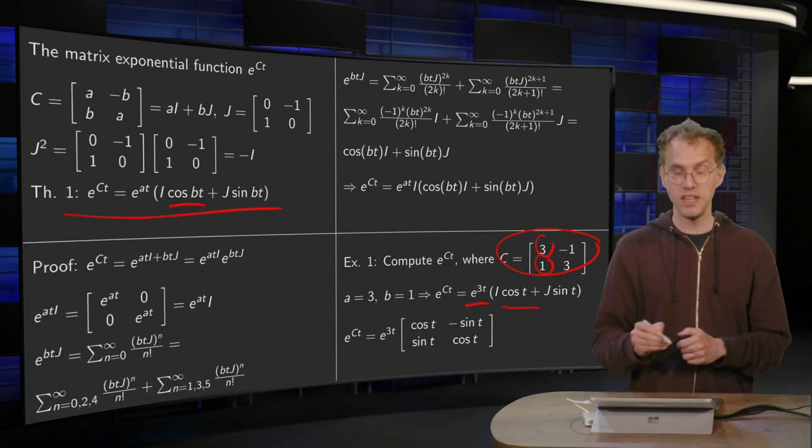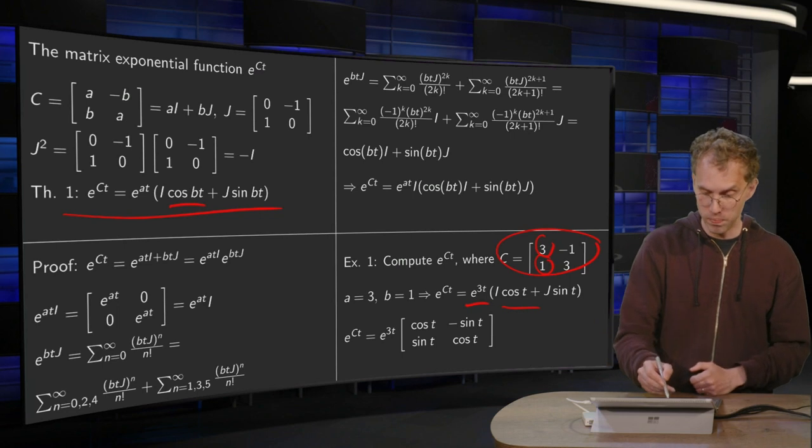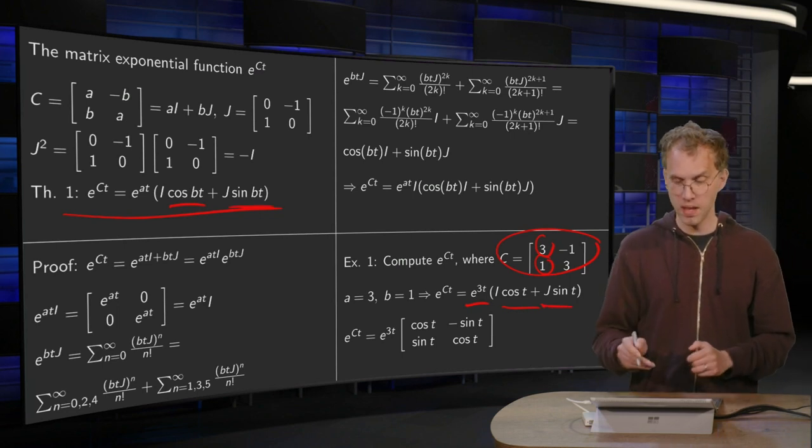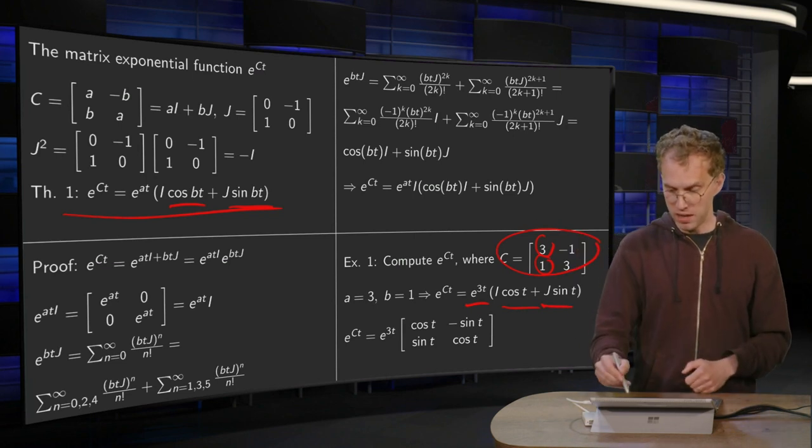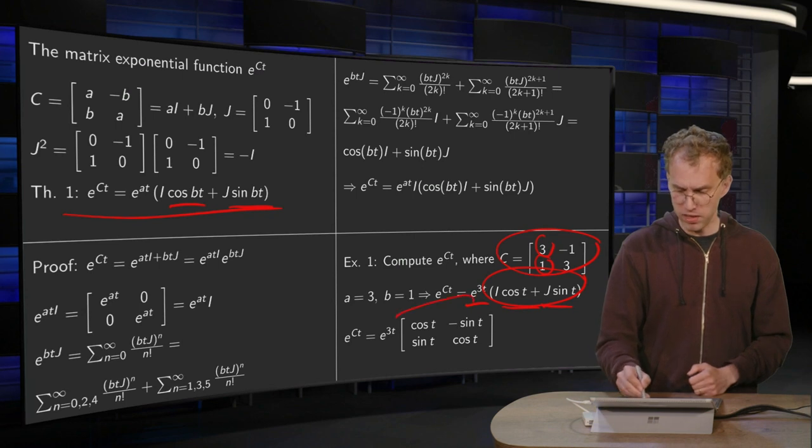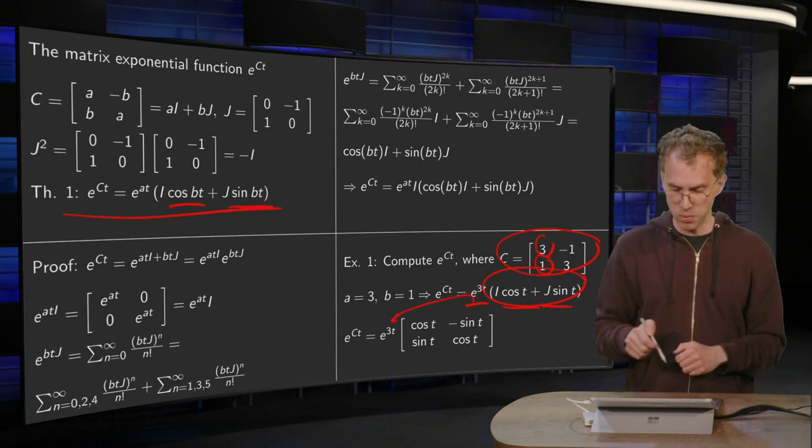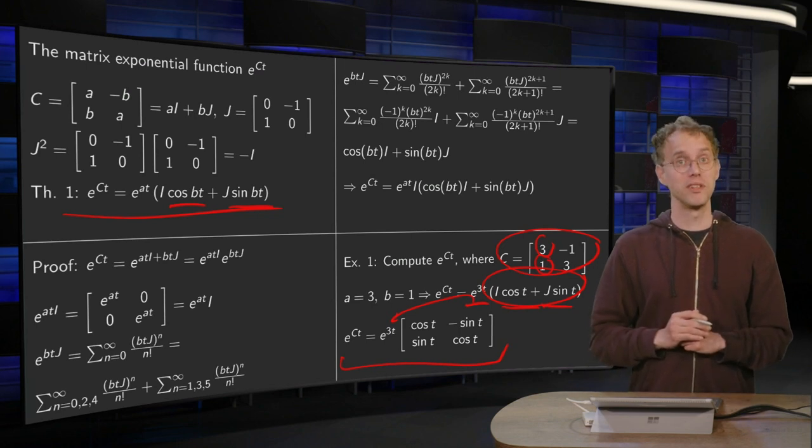i times cosine 1t - i times cosine t plus j times sine 1t, so sine t over here. So there we go. And you can even merge it into one matrix. This part over here is better. I would always leave the e to the power 3t in front, but you can merge the other two. And there you have your expression for e to the power ct.